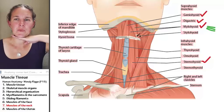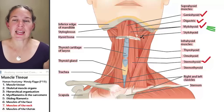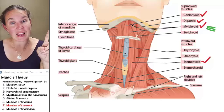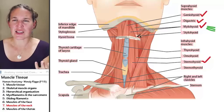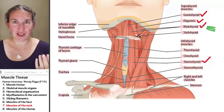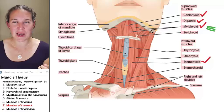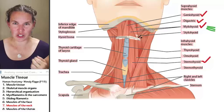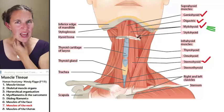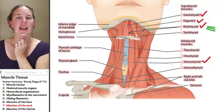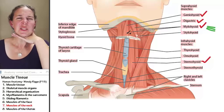Digastric is a weird muscle — it actually has two bellies. "Gastro" means belly. The two bellies of digastric: here's one, and this is the other belly. It comes down and hooks around the hyoid. One belly heads posterior and one belly is in the floor of your mouth.